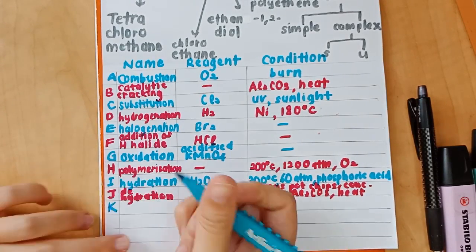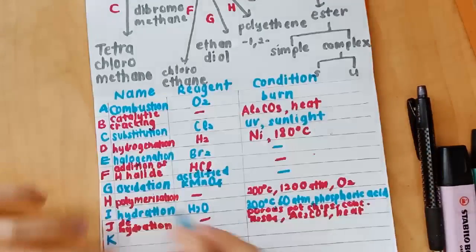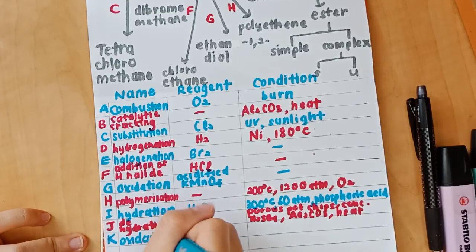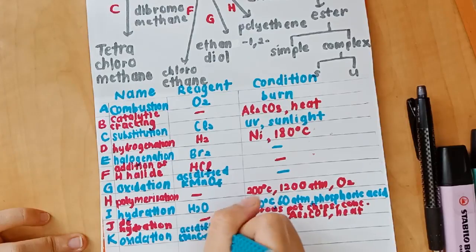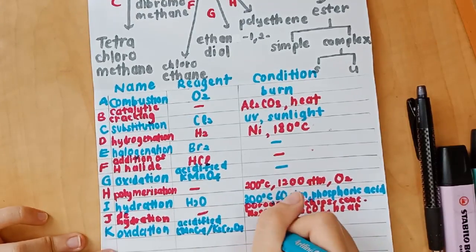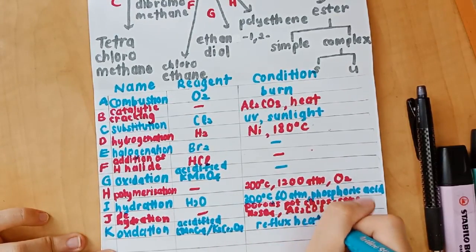And then K is from alcohol to carboxylic acid. Alcohol has to undergo oxidation. The reagent is acidified KMnO4 or K2Cr2O7. You can choose either one.